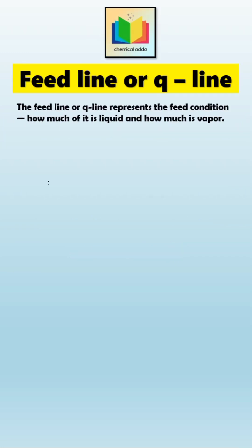The Q line or feed line represents the feed condition. In simple words, the Q line represents how much of the feed entering the column is liquid and how much is vapor.